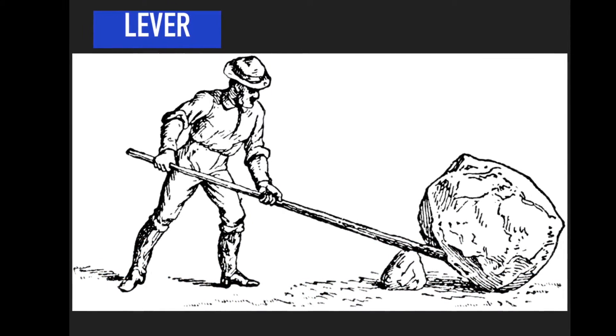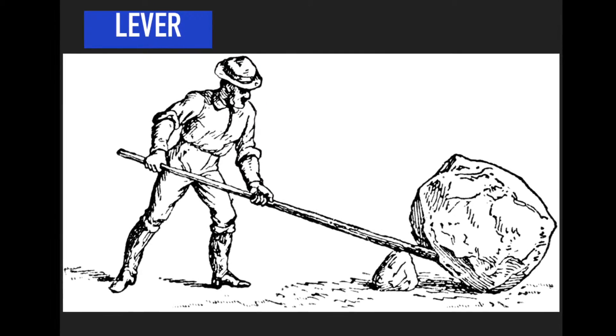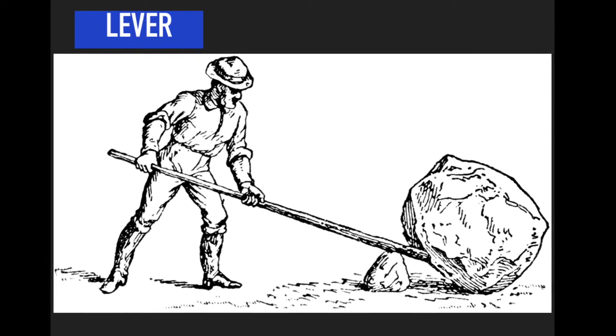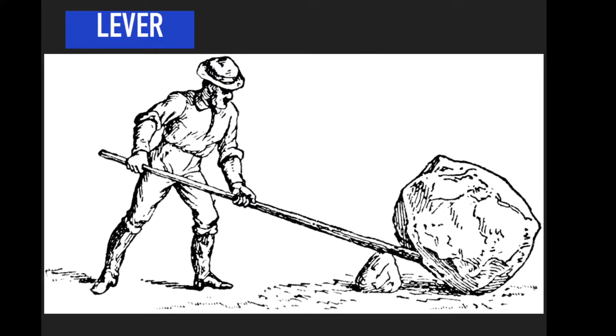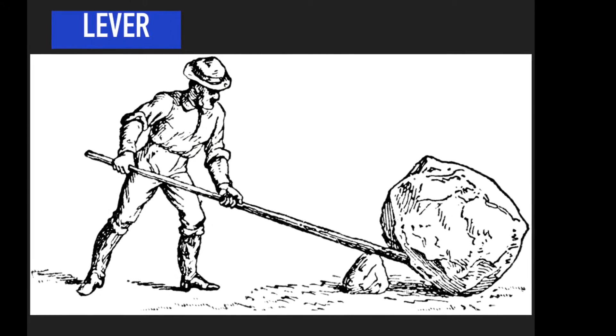There are six types of simple machines and I use some of these in the production of my mousetrap car. A lever is a stiff bar that rests on a fulcrum and is commonly used to lift and move loads.